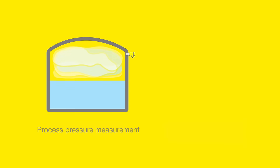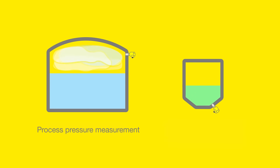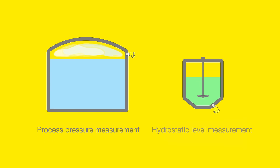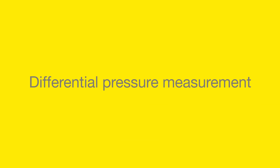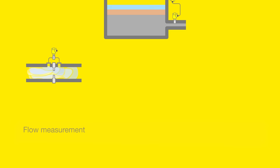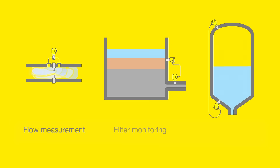What do you want to measure? Obviously, pressure sensors measure pressure, but there are two different measuring principles: conventional pressure measurement for measuring process pressure or hydrostatic level, and differential pressure measurement for measuring flow rate or level, or for filter monitoring.